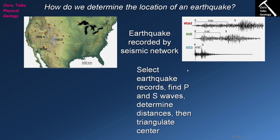An earthquake has occurred, and for each of these three locations we have three different seismograms. On these seismograms, the first P wave to arrive and the first S wave to arrive have been picked out. Remember: the greater the distance between the source of the earthquake and the monitoring station, the bigger the gap between the arrival of the first P wave and the first S wave.